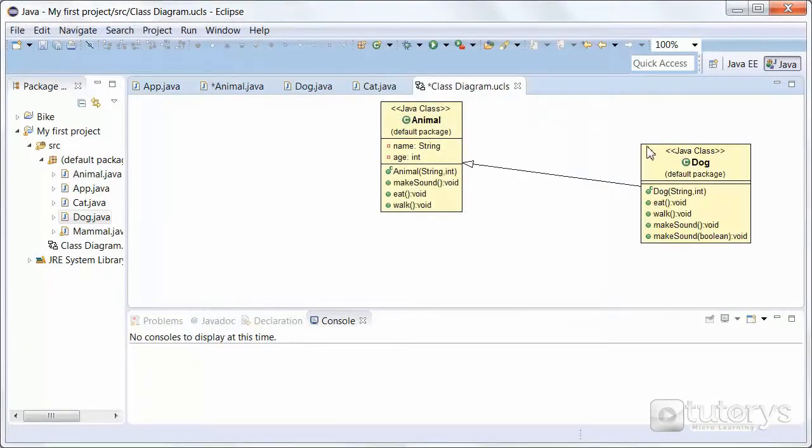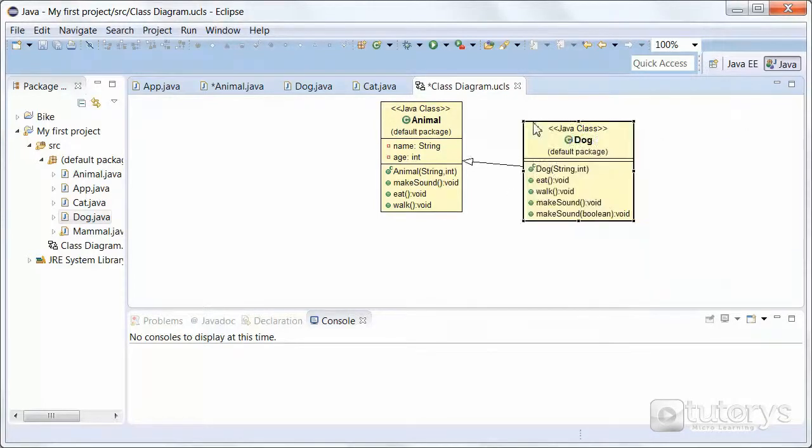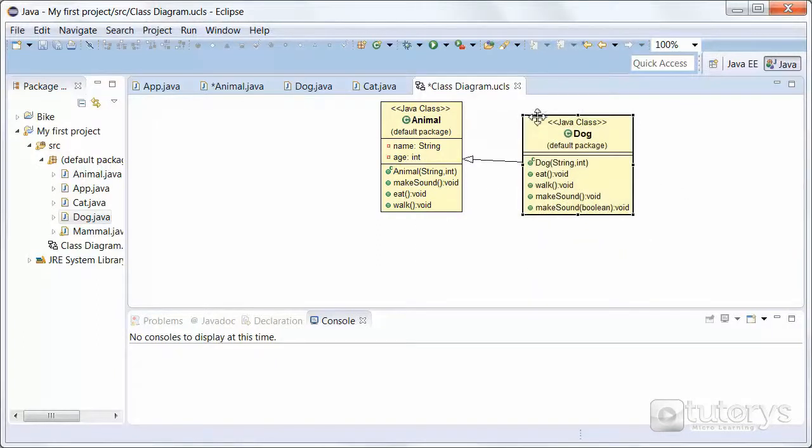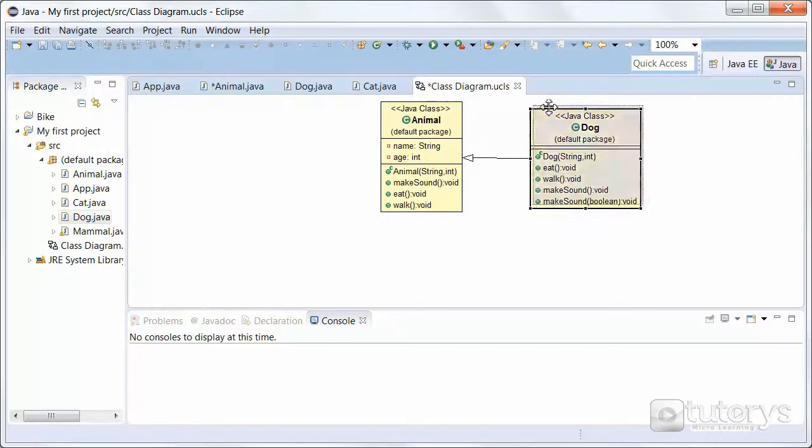As you can see, which is very practical, Eclipse, the plugin for Eclipse, generates the interaction or the relationships, whichever term you prefer, between both objects. As you can see, this is what is known as a generalization relationship that we saw on the previous table.